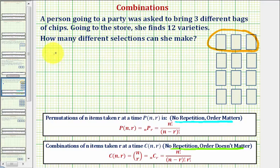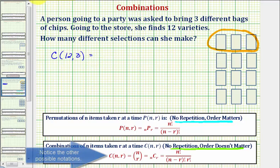So we want to find the combinations of twelve items, or twelve varieties, selected three at a time. So we have twelve choose three. Notice N equals twelve, and R equals three.